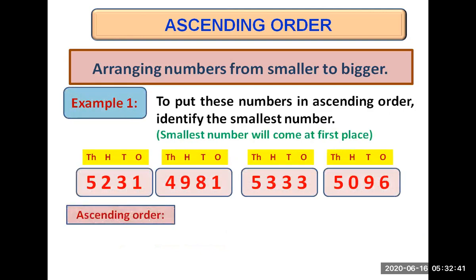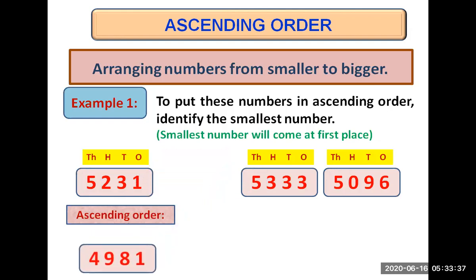Let's have an example. We have four numbers and to put them in ascending order, we first need to identify the smallest number, which will go at first place. Among these four-digit numbers, we compare the highest place value first — the thousands place. We see that the second number has four at its thousands place while all the rest have five. As four is smaller than five, the number 4981 is the smallest and comes at first place.